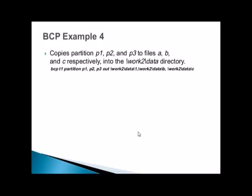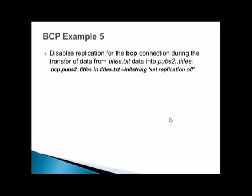Example 4 copies partitions p1, p2, and p3 to files a, b, and c respectively in the /work/data directory: bcp t1 partition p1,p2,p3 out /work/data/a,/work/data/b,/work/data/c. Three partitions map to three separate output files.